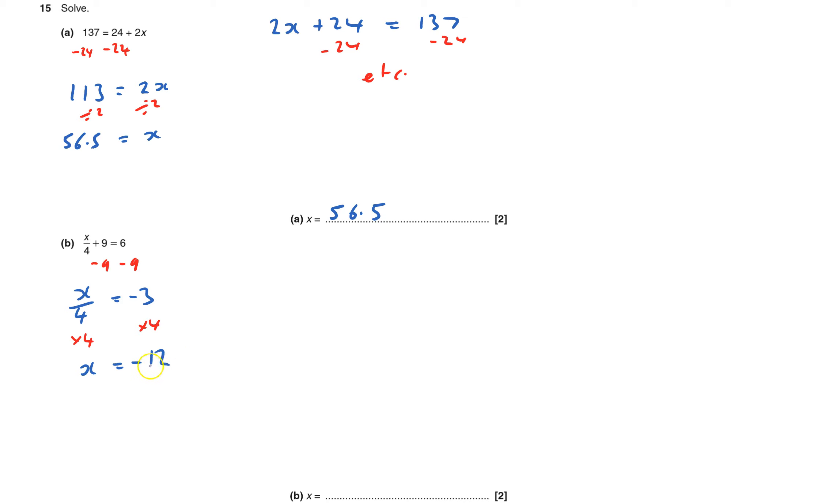Now if you feel a bit unhappy with a negative sign, just try it. Negative 12 divided by 4 is negative 3 and negative 3 plus 9 does equal 6. You've got a calculator, you can always check it on that, but that is the answer. And that's question 15 done.